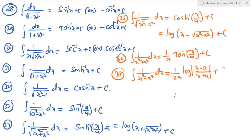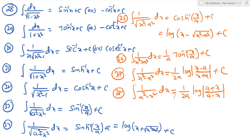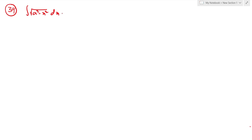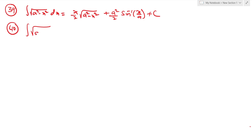Thirty-seventh formula: integration of 1 by (x squared minus a squared) dx equals 1 by 2a times log mod (x minus a) by (x plus a) plus c. Thirty-eighth formula: integration of 1 by (a squared minus x squared) dx. Thirty-ninth formula: integration of square root of (a squared minus x squared) dx equals x by 2 times square root of (a squared minus x squared) plus a squared by 2 times sine inverse of (x by a) plus c.